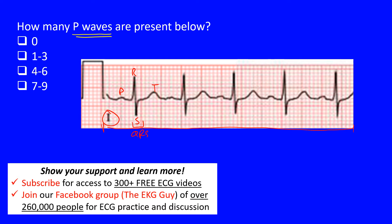The P wave represents atrial depolarization. You don't see the atrial repolarization wave because it's buried within the QRS complex, though sometimes you can see it with slower rhythms or some pathology. The QRS complex represents ventricular depolarization, and the T wave represents ventricular repolarization. So we depolarize the cells, then repolarize, and we constantly have this cycle.